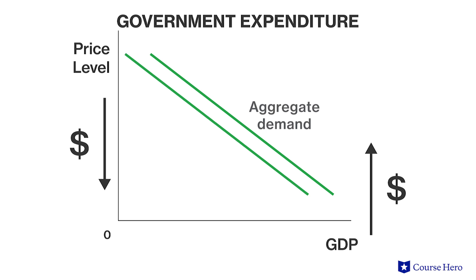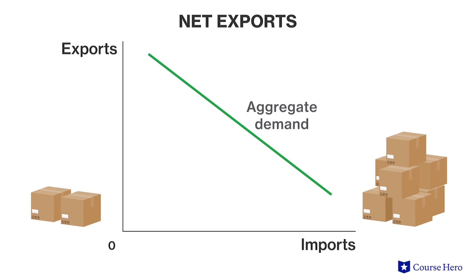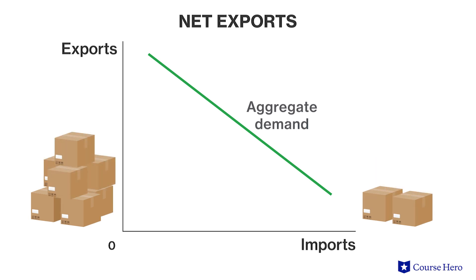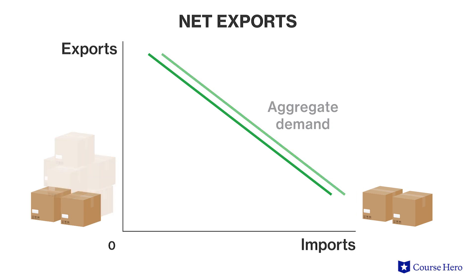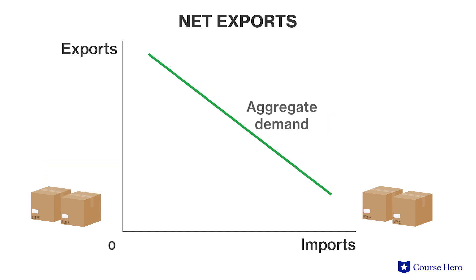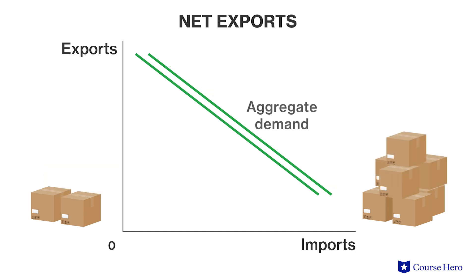The last factor that can cause a shift in the aggregate demand curve is net exports. An increase in exports or a decrease in imports will shift the aggregate demand curve to the right. A decrease in exports or an increase in imports will shift the aggregate demand curve to the left.